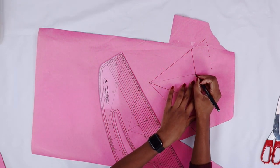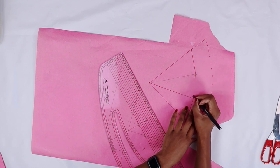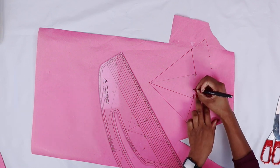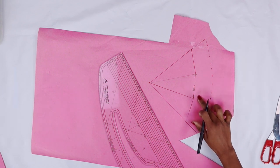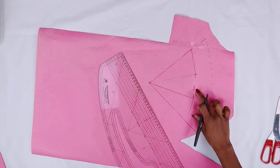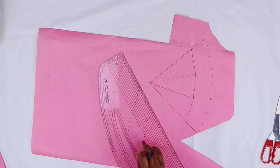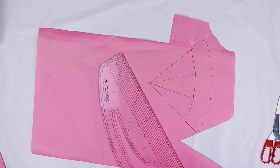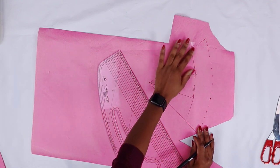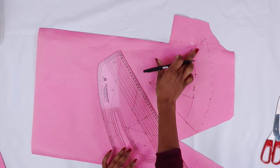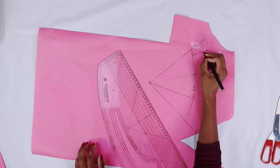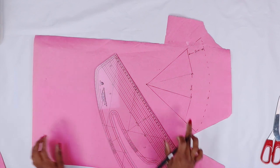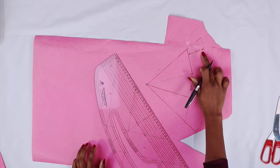So between here I added seven centimeters for mine, but you can add whatever space you want to add. I would say add between three to ten centimeters. It's up to you how much you want. For mine I added five centimeters. Again, this is your preference.